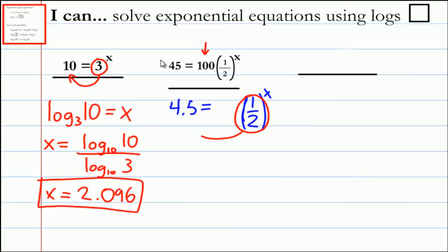If we switch this to logarithmic form, we have log base one half of 4.5 equals x. Now we can use the change of base formula: natural log of 4.5 divided by the natural log of one half, and that will give us the answer x.